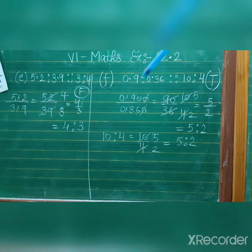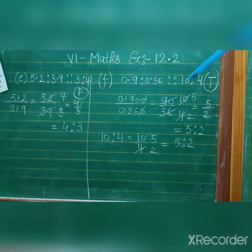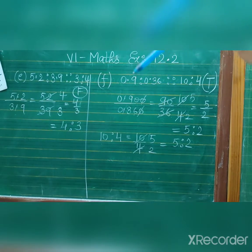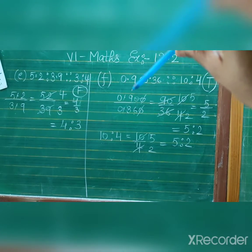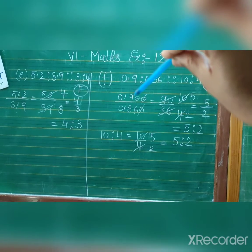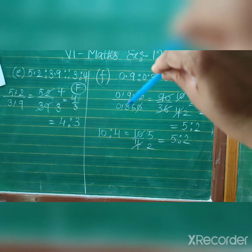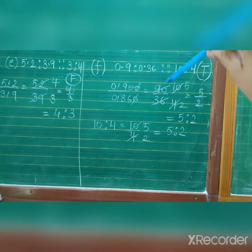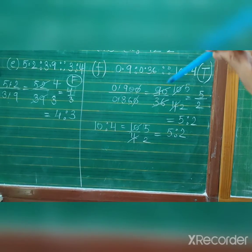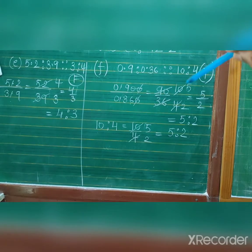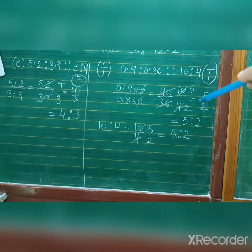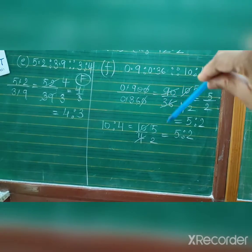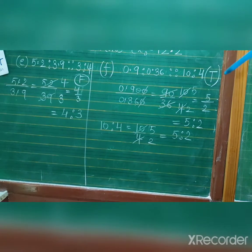For F: 0.9 is to 0.36 with proportion sign as 10 is to 4. For 0.9 upon 0.36 - one decimal digit versus two decimal digits, so multiply to get 90 upon 36. Simplifying: 9 upon 4 then further gives 5 upon 2, so the ratio is 5 is to 2. For 10 is to 4, that also simplifies to 5 is to 2. Both ratios are equal, so this statement is true.